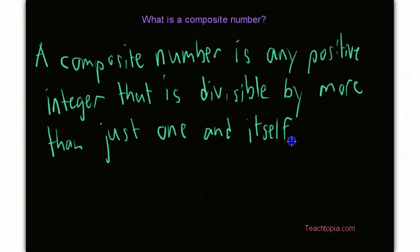Now I'm well aware that there are many of you out there that are going to hear this definition or read this definition and say, well that doesn't really help me. I need some examples. But I will go ahead and repeat the definition for you. A composite number is any positive integer that is divisible by more than just one and itself.